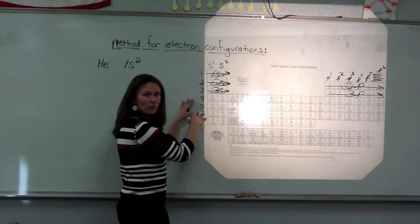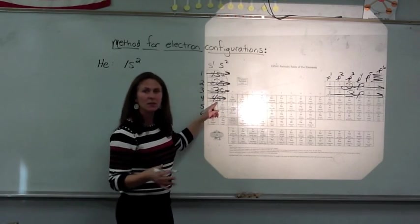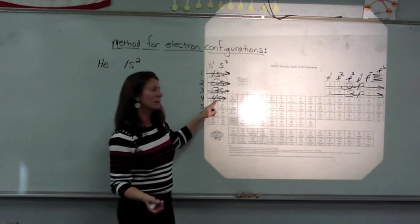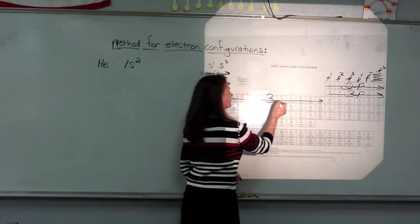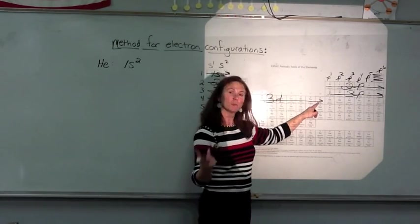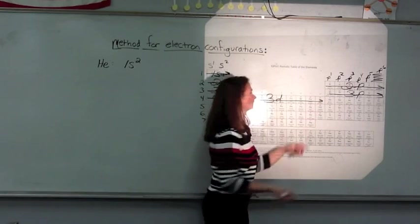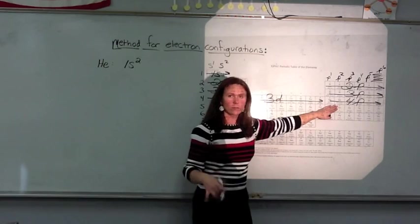After the 3p, we come back over to the left side. And this is where we can clearly see that the 4s does fill before the 3d. Then the 3d fills with 10, which you notice there's 10 elements all the way across in this d block. And then we go back and fill the 4p.